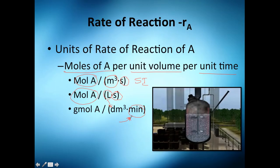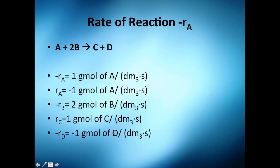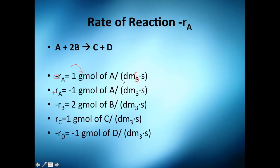Here's an example: A plus two molecules of B react to form C and D. I'll show you a list of rates — the rate of reaction of A and the rate of production. Notice the negative sign here for A: it's one gram of A per cubic decimeter per second. Since A is a reactant, it has a minus sign.